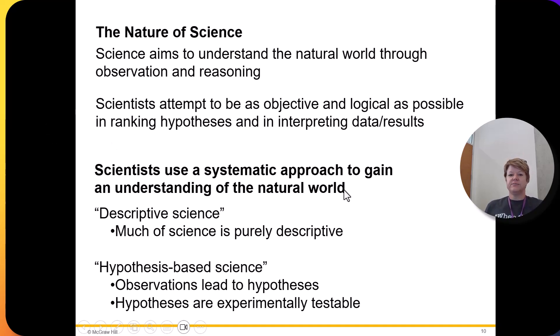Scientists use a systematic approach. Like I said, descriptive science is that observational side. A lot of science is very descriptive. You've got to start somewhere. You have to start with what can we figure out right now. Then you might formulate hypotheses that can be tested and they have to be testable.